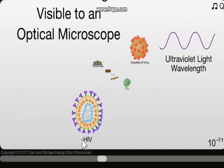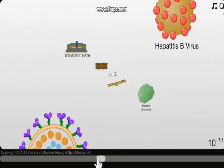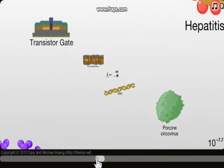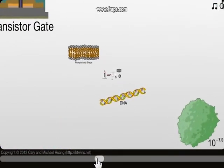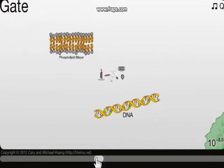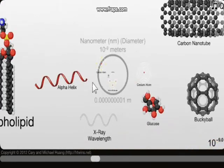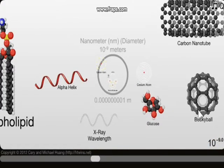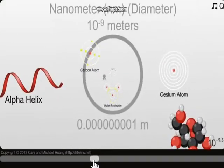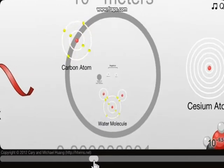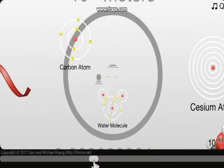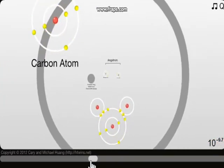HIV — I hate that. Okay: transistor gate, DNA — whoo, DNA! That's a phospholipid bilayer. I know about the buckyball, that's for sure — heard about that in science. This is getting very useful. Atoms — oh my god! This is very good for my chemistry and physics lessons.